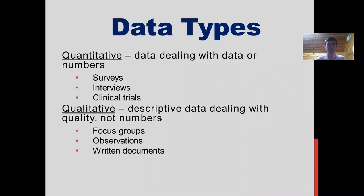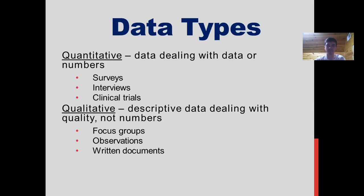The two main types are quantitative and qualitative. Quantitative data is data dealing with numbers and includes things like surveys, interviews, and trials. Qualitative data, on the other hand, is more descriptive in nature and not dealing with numbers, and often includes focus groups, doing observations, and written documents.